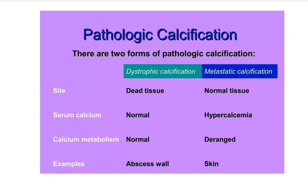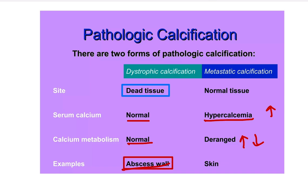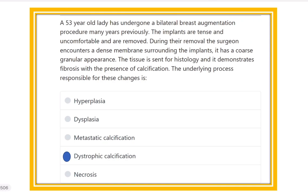To summarize the difference: dystrophic calcification means dead tissue, serum calcium is usually normal. In metastatic calcification, serum calcium is increased and calcium metabolism is abnormal. Examples of dead tissue include an abscess wall and a foreign body — both lead to dystrophic calcification. Living tissue, such as skin, is associated with metastatic calcification.